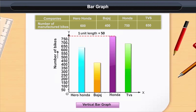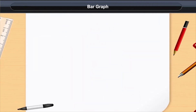Now we will draw vertical bars of equal width, keeping the same distance between them. The length of each bar denotes the needed information. For example, the number of bikes manufactured by Hero Honda is 600, therefore we draw a bar of length 600.